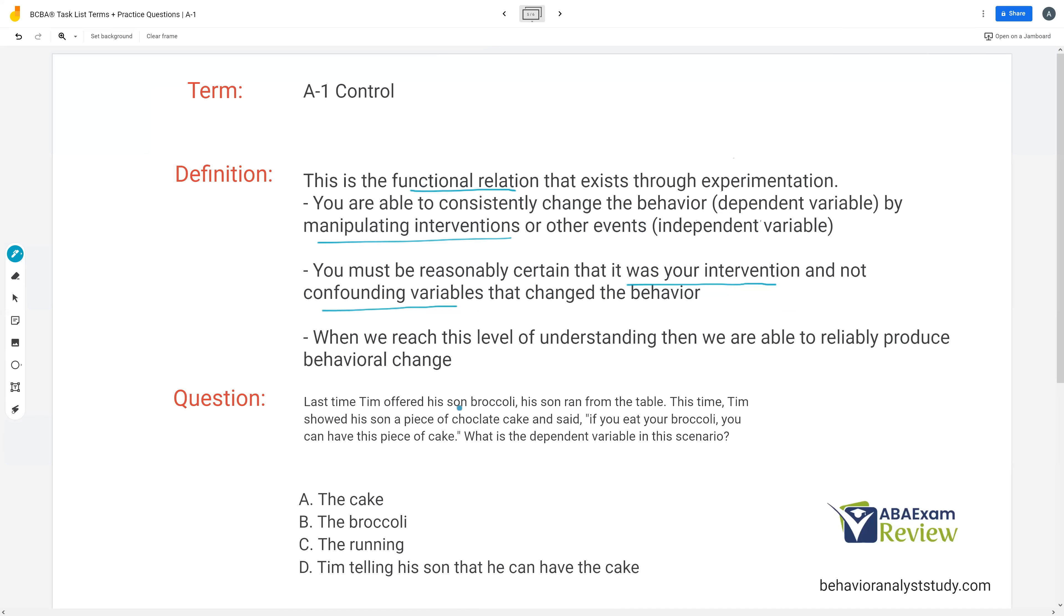Question. Last time Tim offered his son broccoli, his son ran from the table. This time Tim showed his son a piece of chocolate cake and said, if you eat your broccoli, you can have this piece of cake. What is the dependent variable in this scenario? Now, remember, the independent variable is what we are manipulating. The dependent variable is going to change or not change depending on our manipulation. But we're trying to change the dependent variable. So the dependent variable is typically going to be your behavior. So the DV in this situation is what? Well, what is Tim trying to change? Well, he wants his son to not run from the table when he sees broccoli. That's his dependent variable. What Tim is doing is he's implementing this intervention. If you eat your broccoli, you can have this piece of cake.